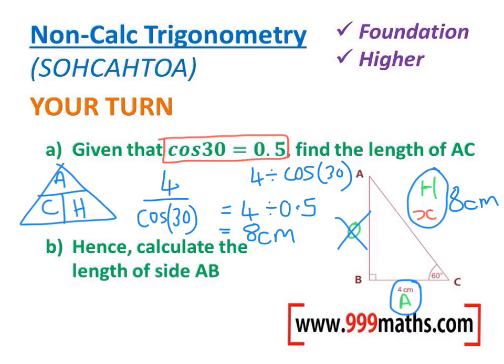Part B is asking you to do something very different. It's asking you to work out the length of side AB. You could use normal SOHCAHTOA for this, but we'd need to have other values. And on a non-calculator question, that would be very tricky. So the other way, of course, to work out the missing side of a right-angled triangle, especially one where you know two other sides, is to use Pythagoras.